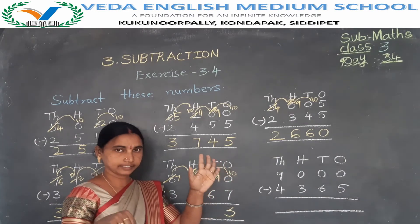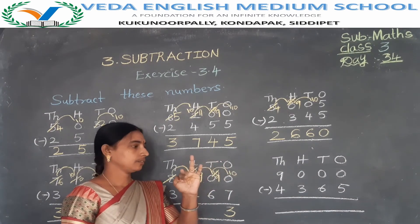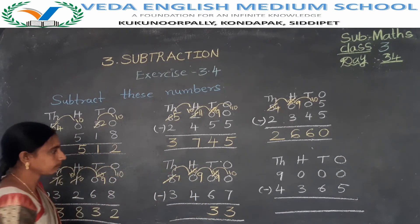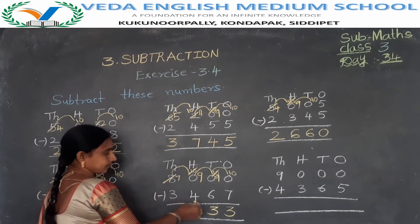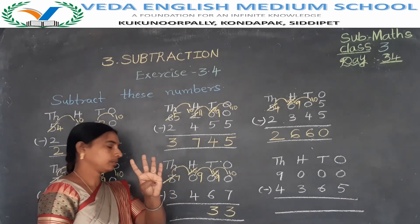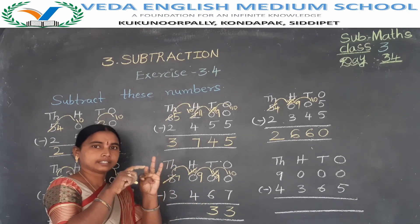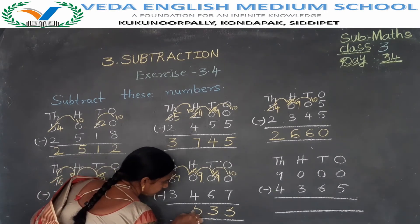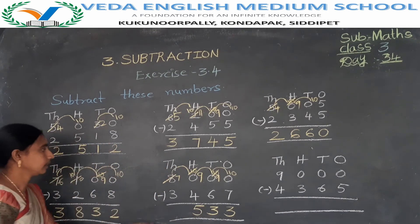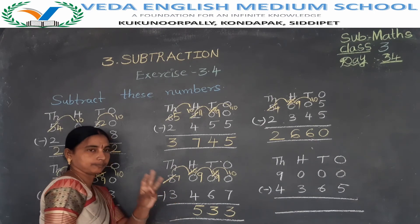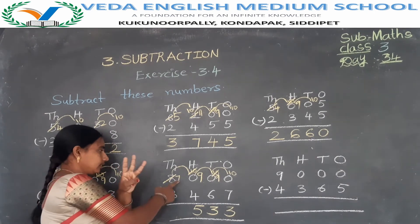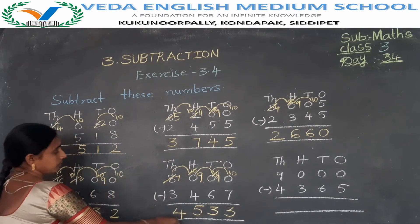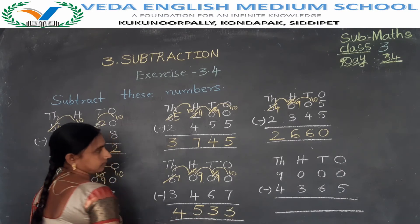9 minus 4: backward counting — 8, 7, 6, 5 — equals 5. Then 7 minus 3 equals 4. The difference is 4533. Understood?